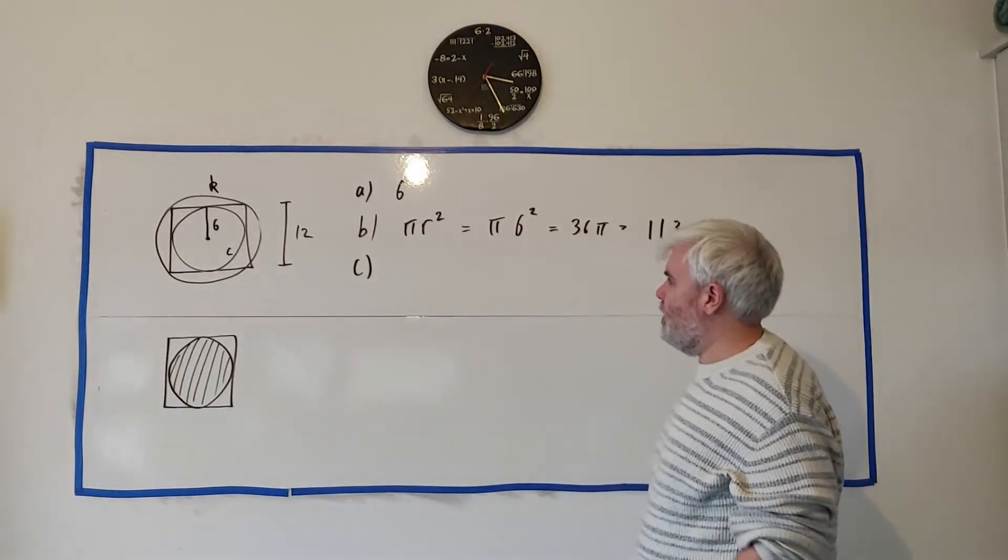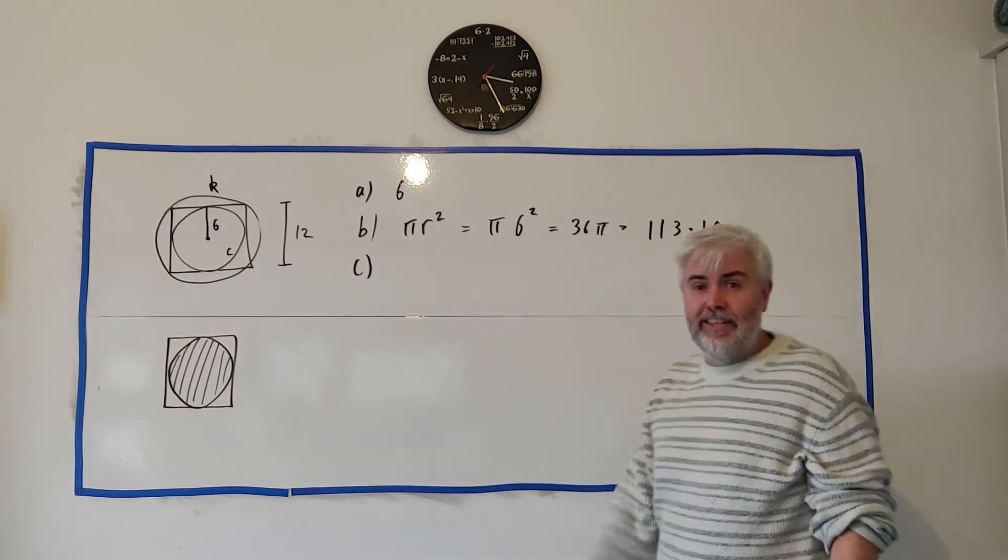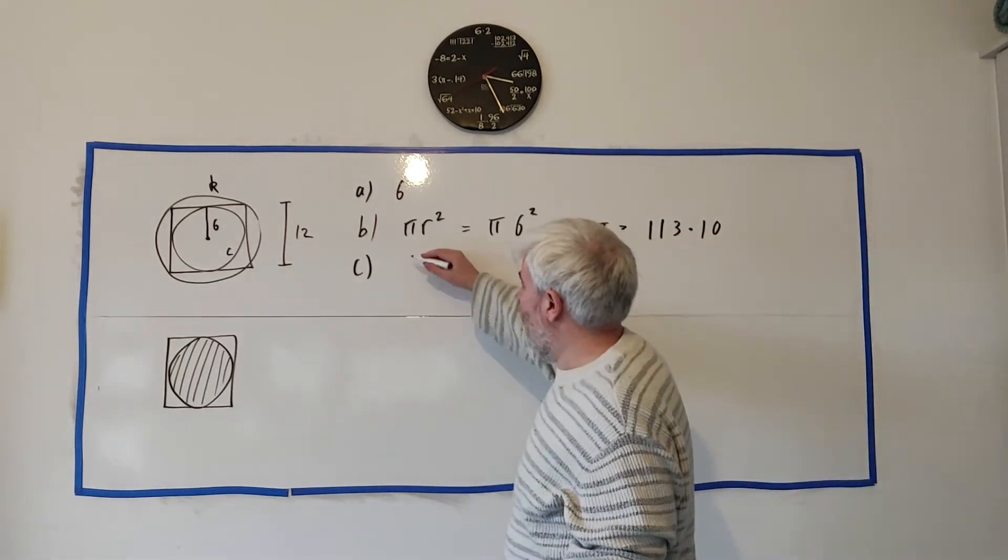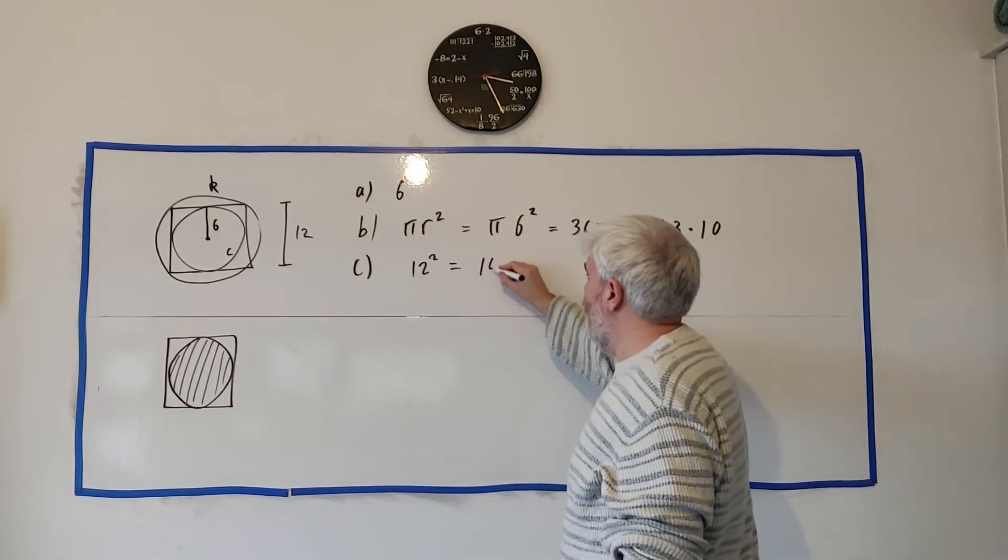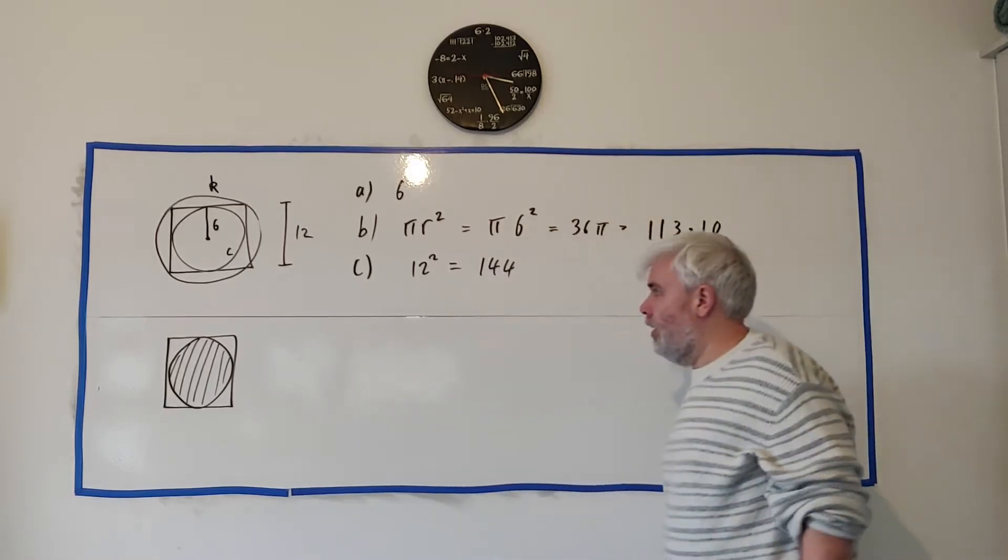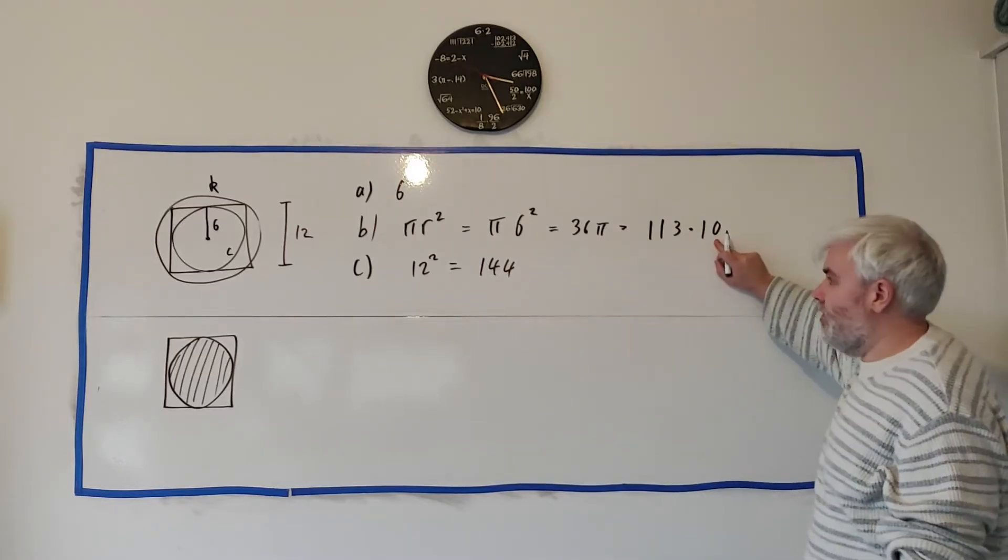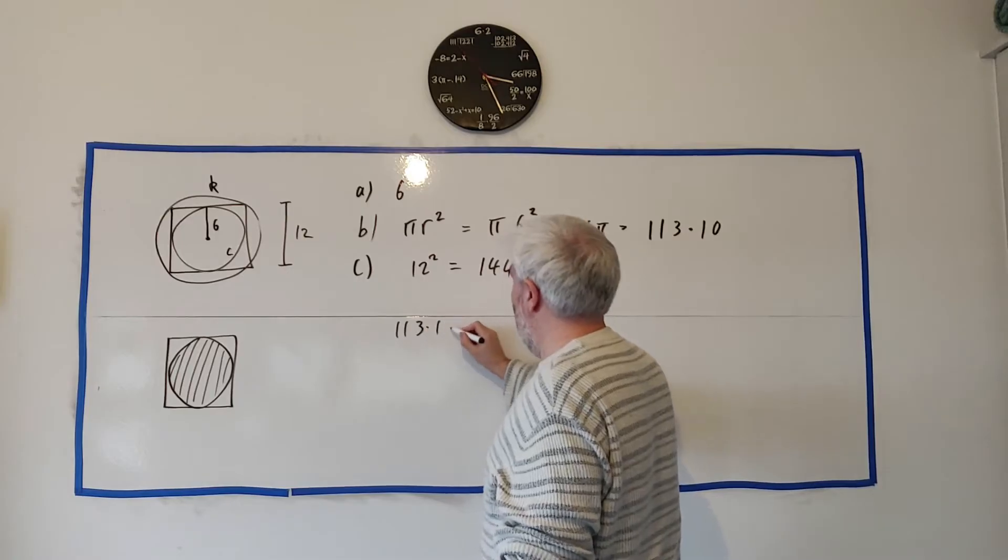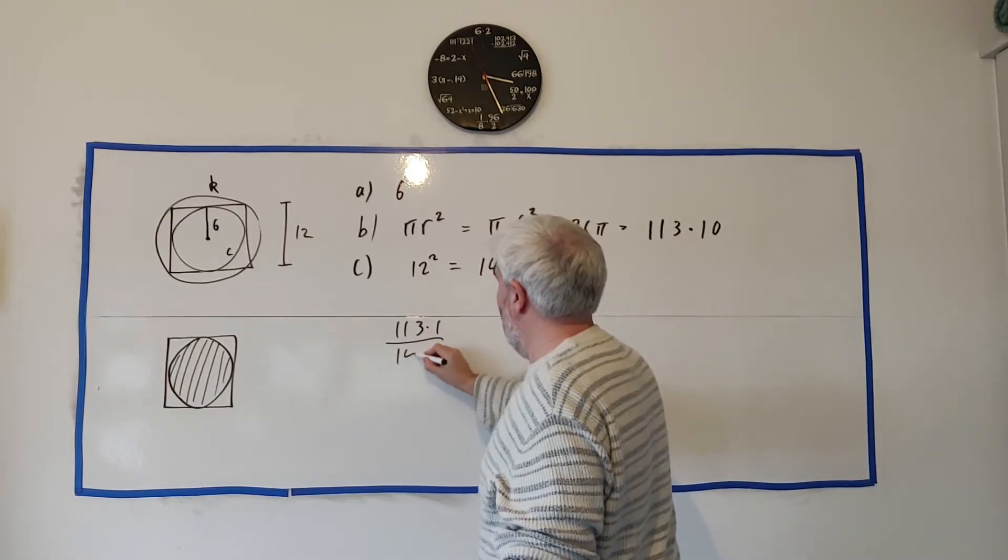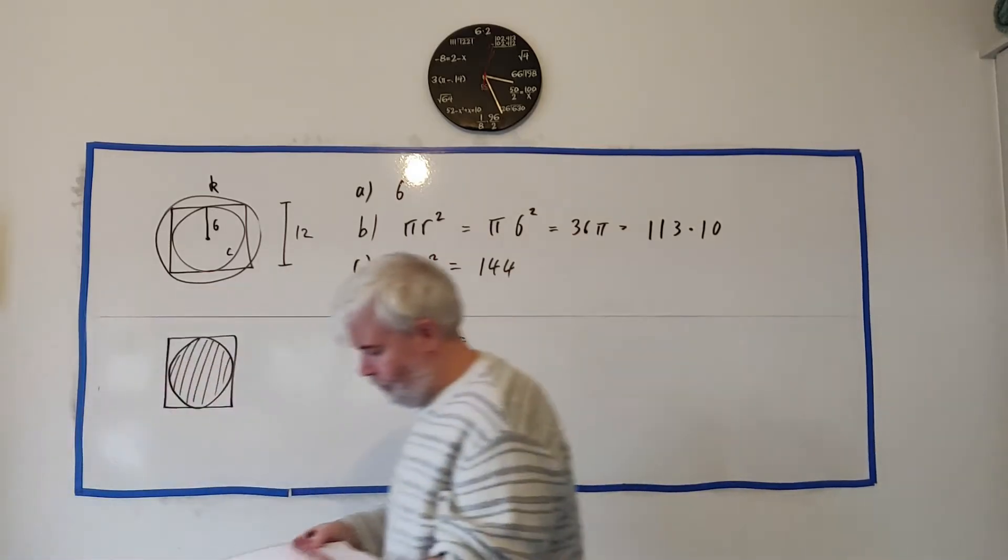So how do we work this out? We have the area of the circle, all we need to do is get the area of the square and the area of the square is 12 squared which is 144. So what percentage of this is this? We just divide it, 113.1 divided by 144 is equal to...